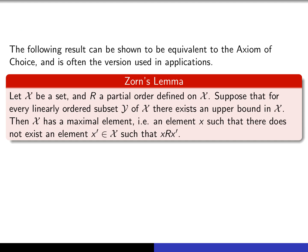And in fact, Zorn's Lemma is something which can be deduced from the axiom of choice. And conversely, if you assume that Zorn's Lemma is true, you can deduce the axiom of choice from it. So it can also be assumed to be a fundamental assumption of mathematics. It says that if script X is any set on which is defined a partial order R,